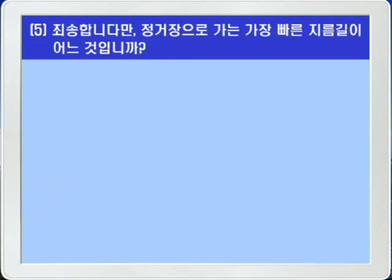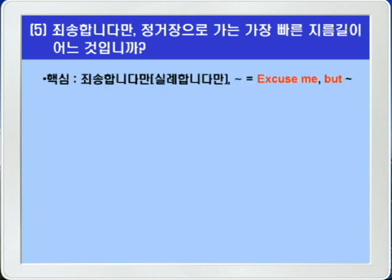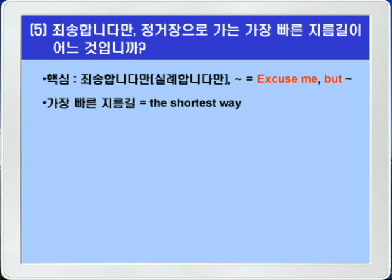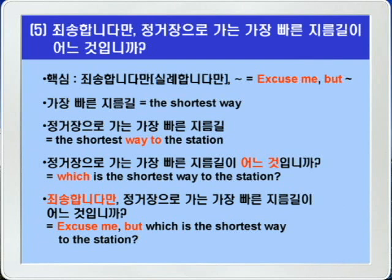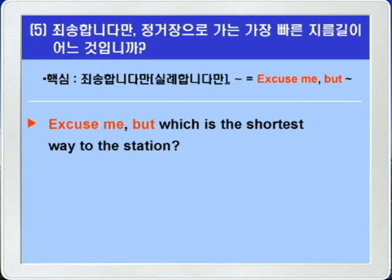마지막 5번입니다. 죄송합니다만 정거장으로 가는 가장 빠른 지름길이 어느 것입니까? A번 13번에서 배운 'Excuse me but 뭐뭐'를 씁니다. '가장 빠른 지름길'은 the shortest way, 전치사 to를 써서 to the station. 선택의 의미이므로 의문사 which를 씁니다. 정답: Excuse me but which is the shortest way to the station?